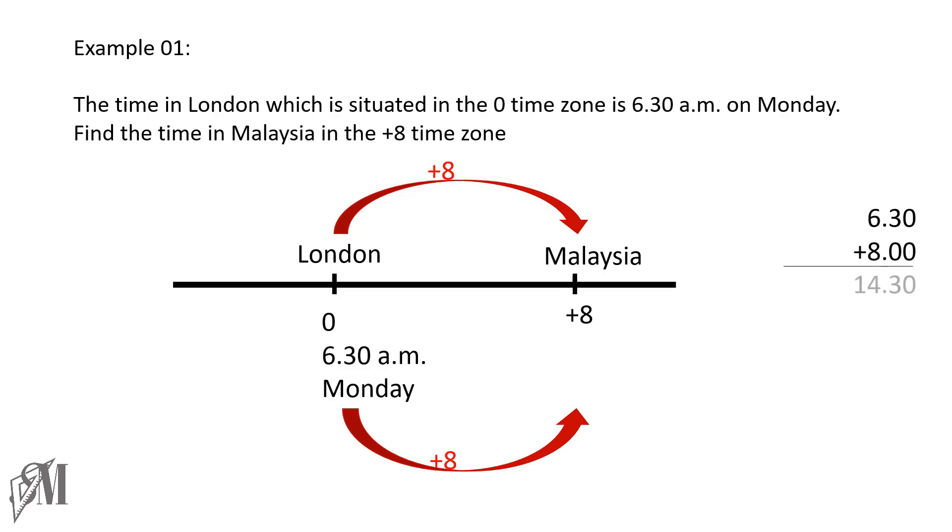14:30 is in 24-hour clock, but the time in London is given in 12 hours. Therefore, we subtract 12 hours from the answer, and then we receive 2:30. That is the time in Malaysia, 2:30 PM. The date will not change. The day will still be Monday because it has not reached midnight 12 o'clock.